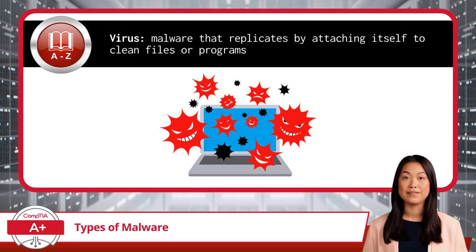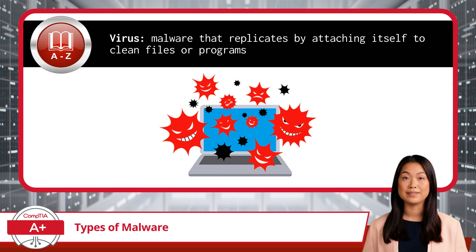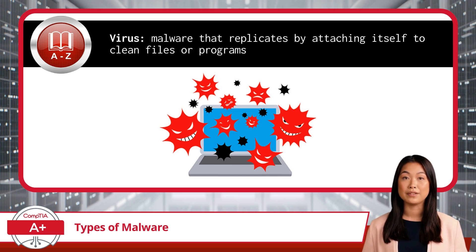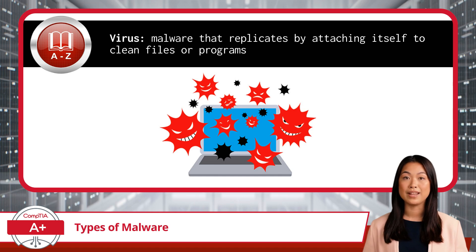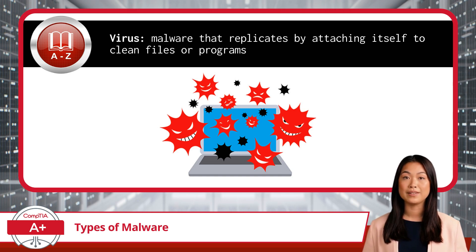First up, we have viruses. A virus is the classic form of malware that replicates by attaching itself to clean files or programs. When those files or programs are executed, the virus activates and spreads further. Its behavior is all about multiplying and infecting as many files as possible, like a digital contagion. Viruses can corrupt data, slow down your system, and even destroy files.